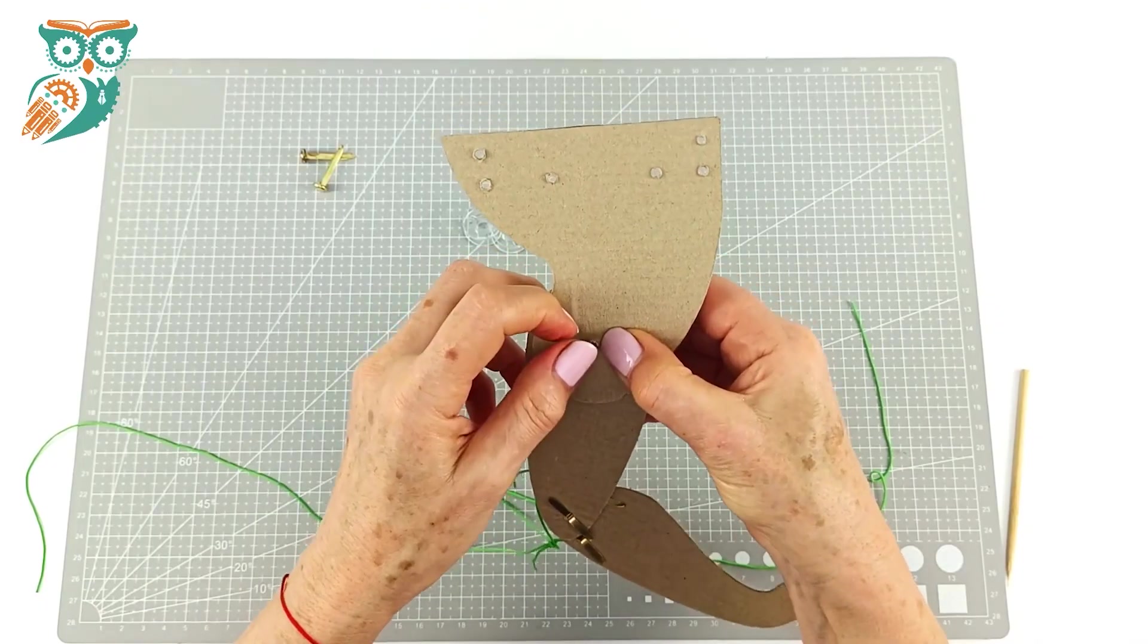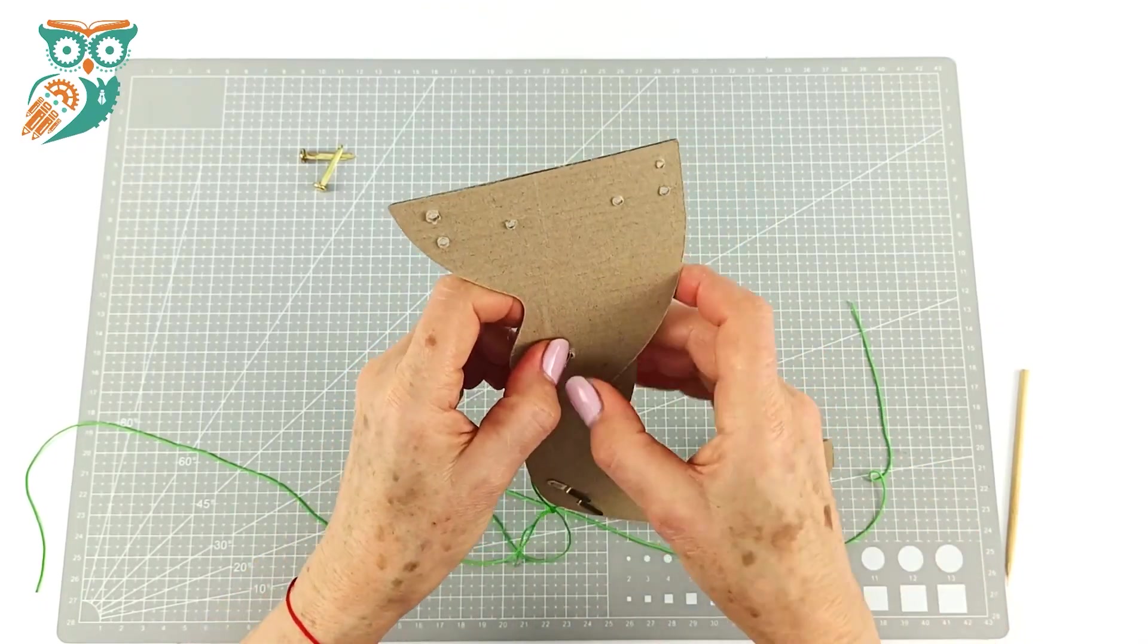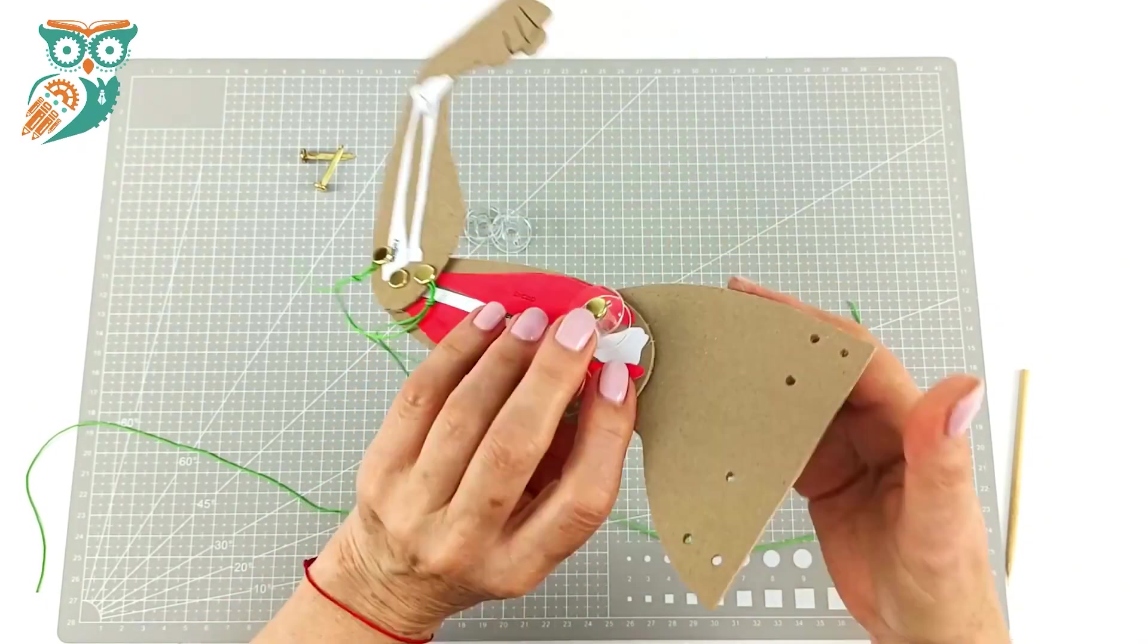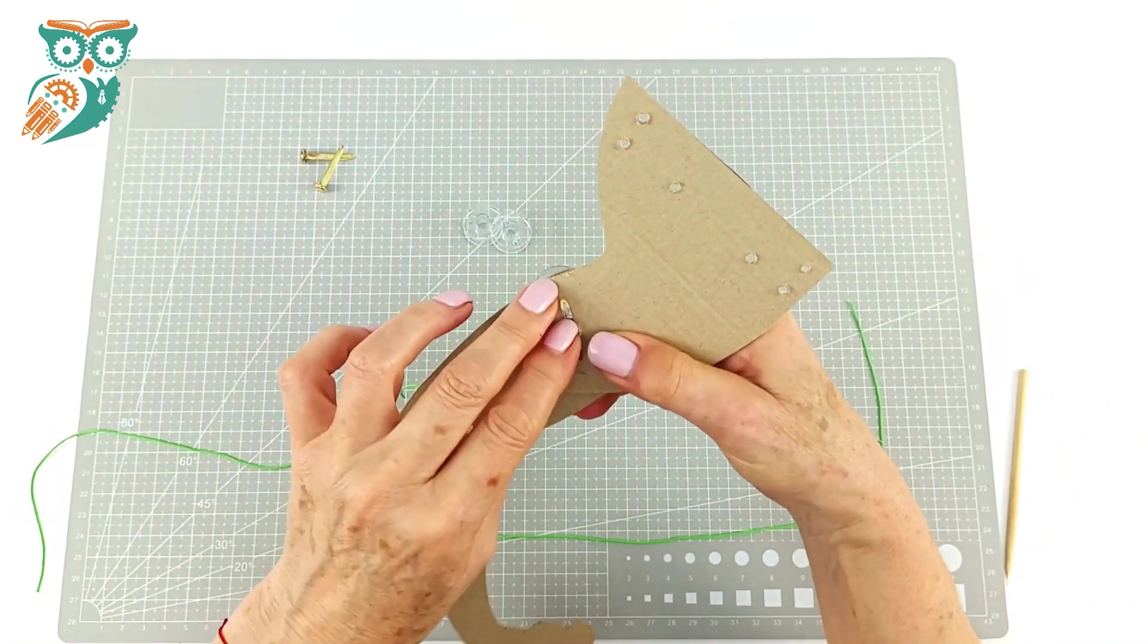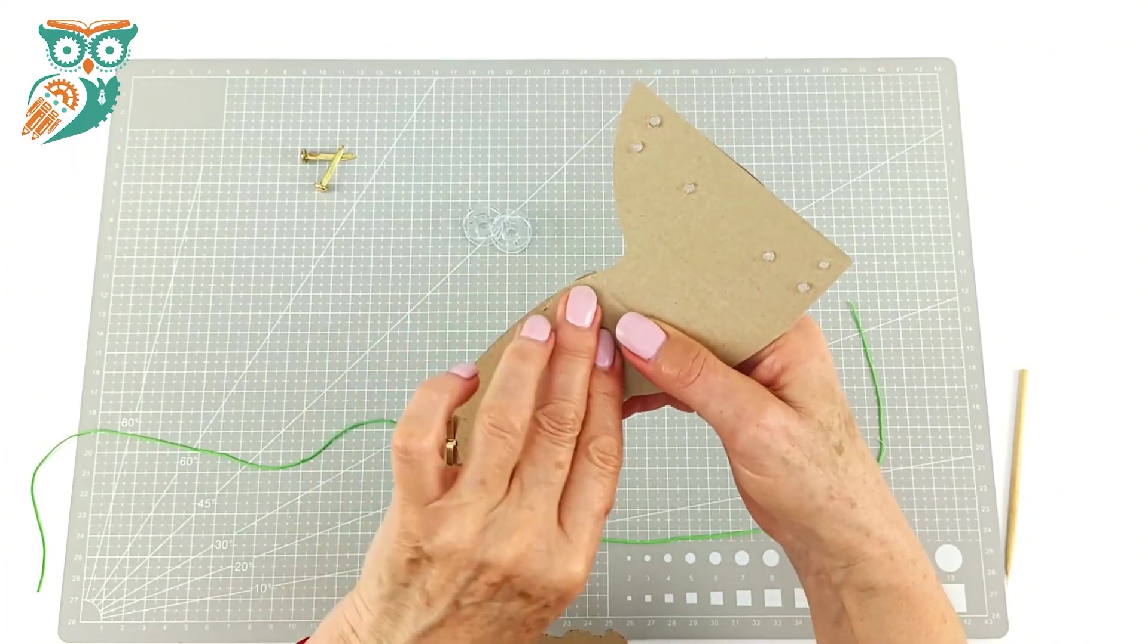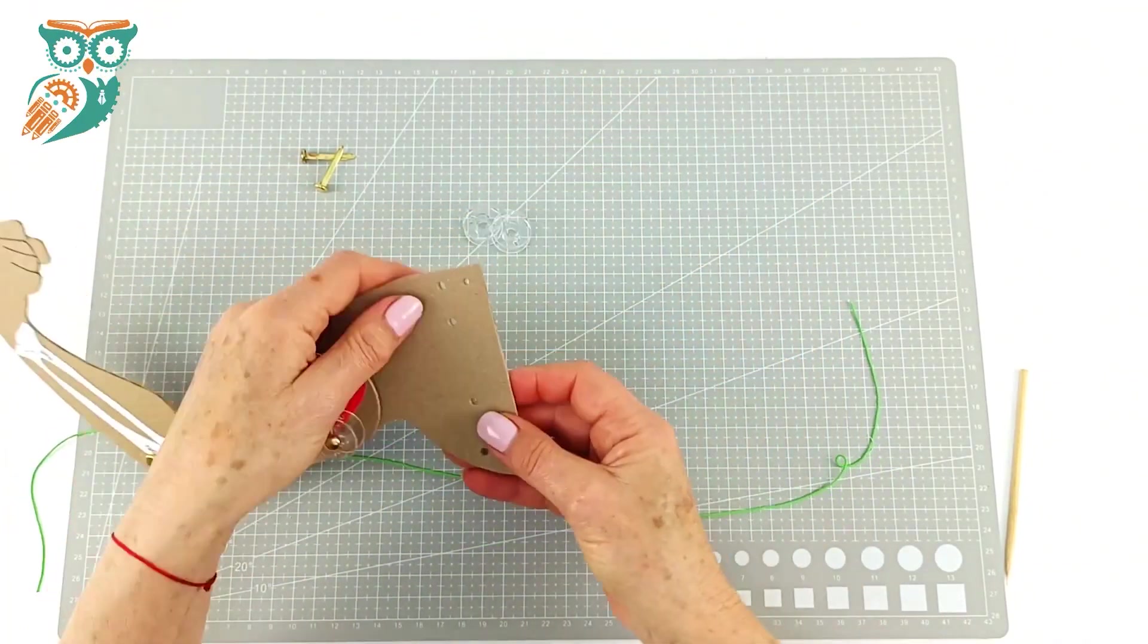So now we're going to attach it to our shoulder and create the shoulder joint here. Again you want to make sure that that can move and that everything is fairly free-flowing.